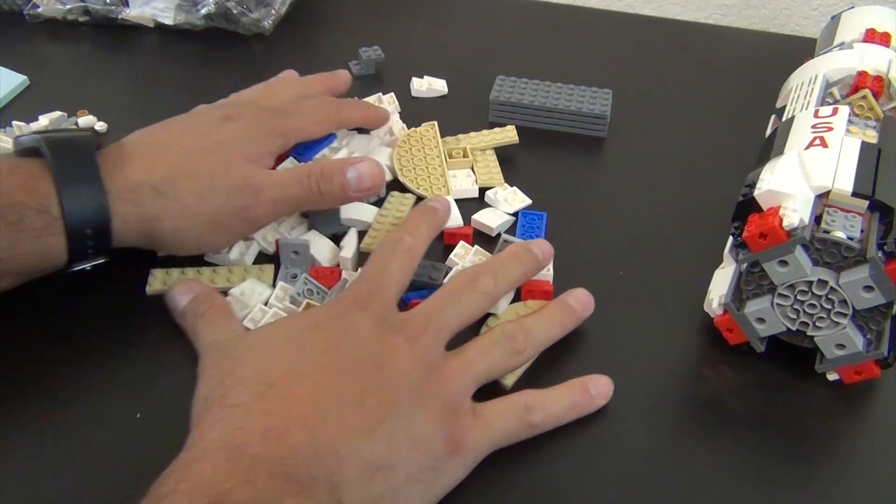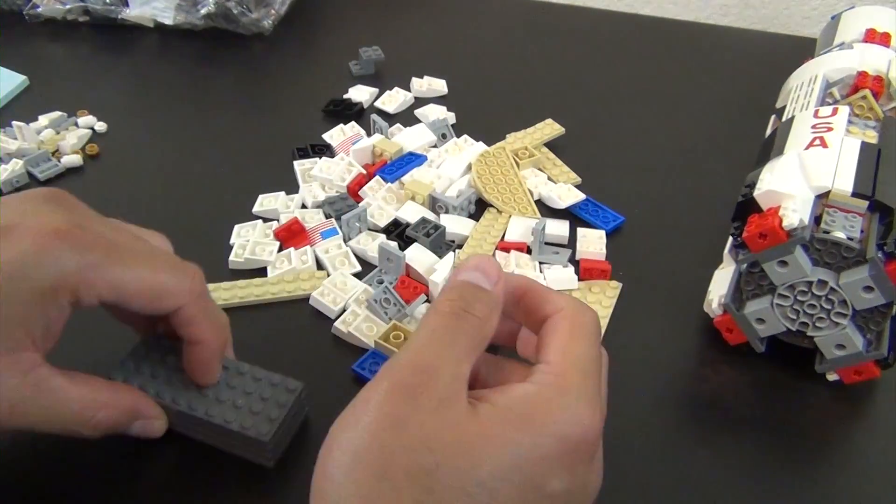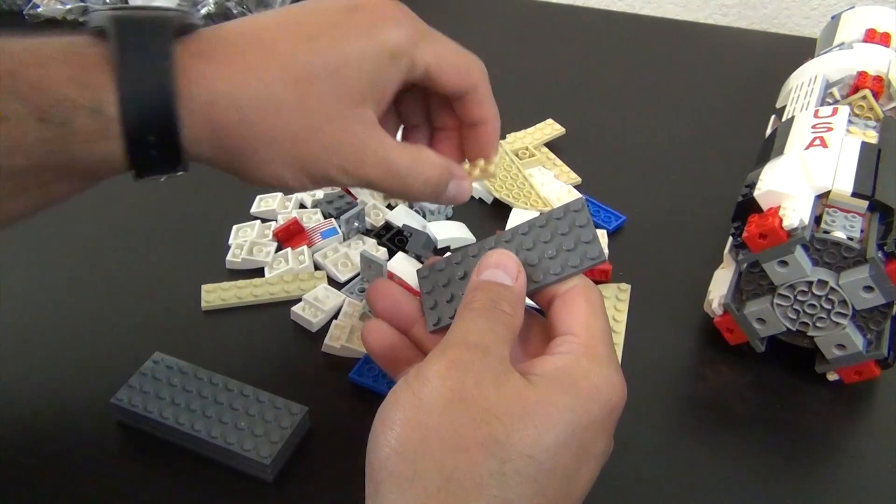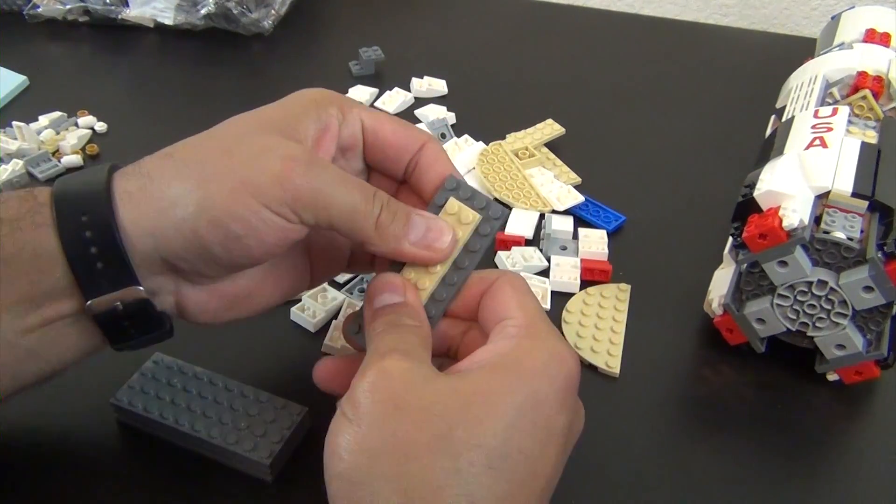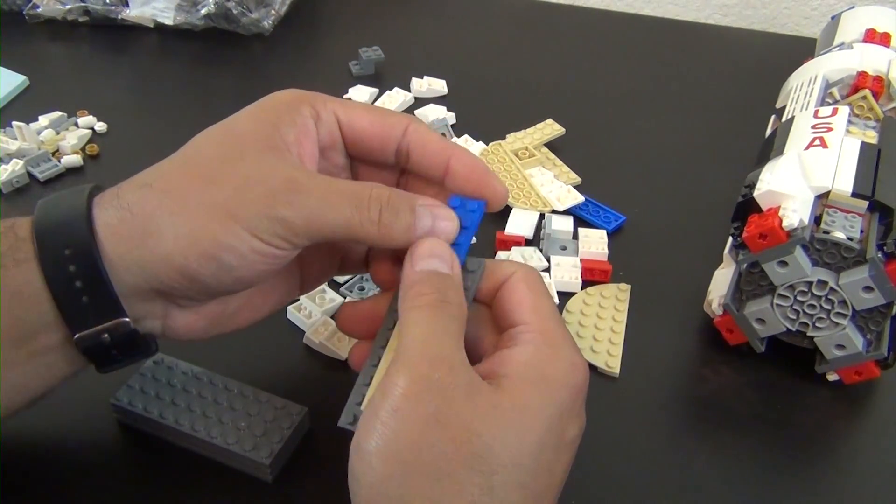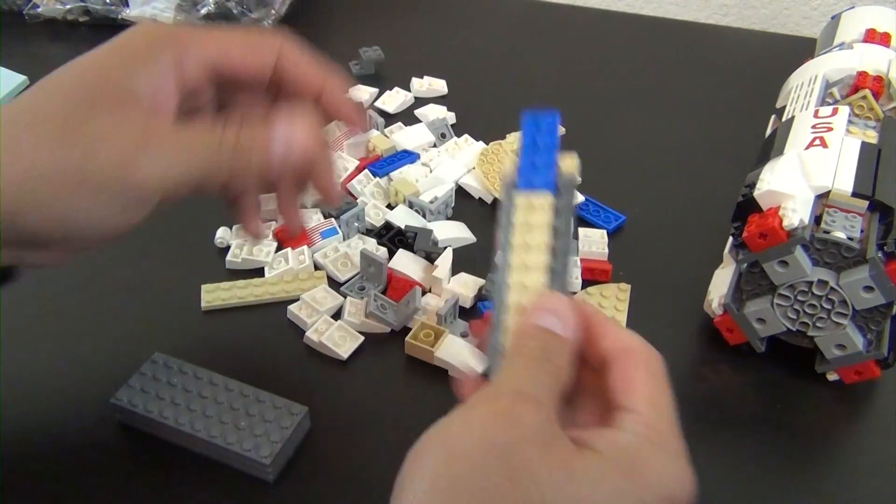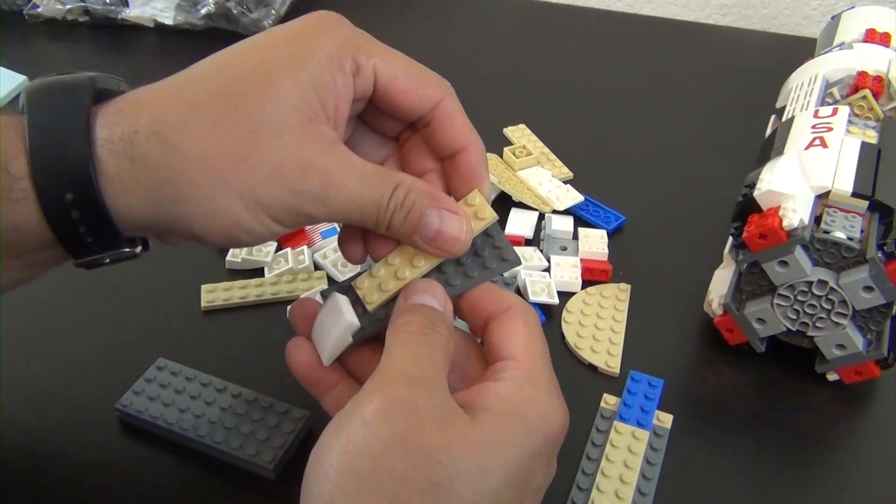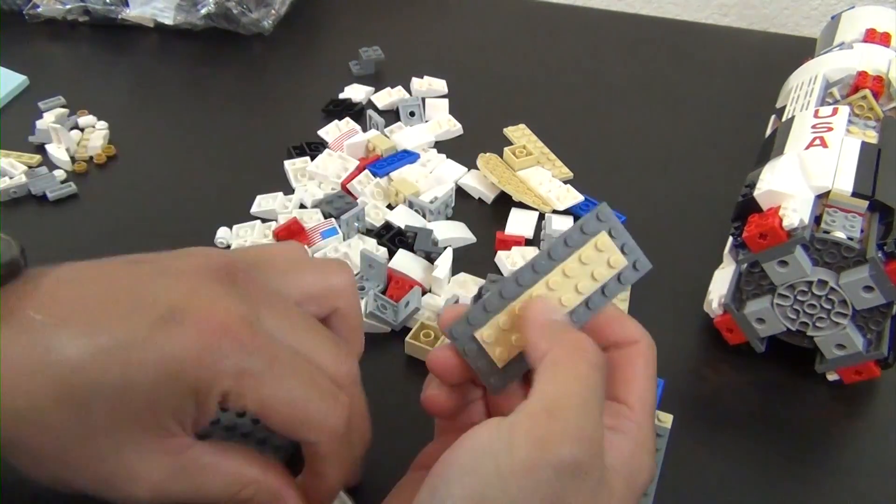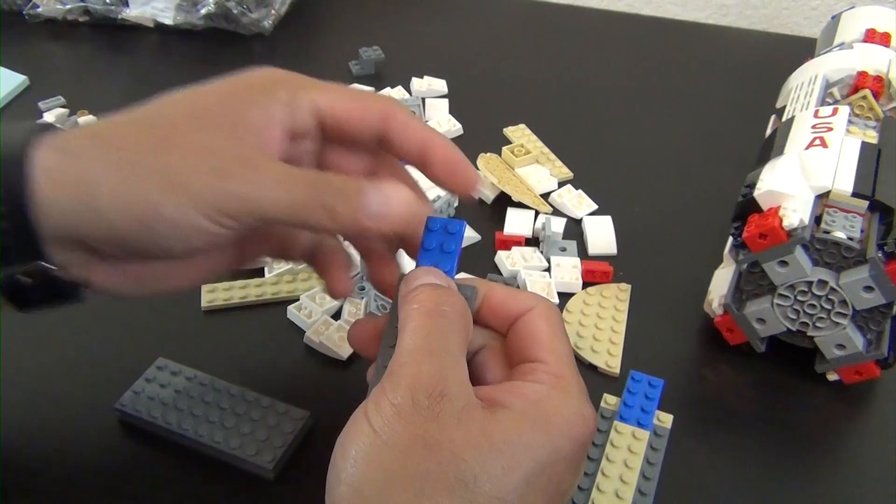Okay, with all of our bag three parts out, we do have another four times build. Start with some plates here, plate underneath there. So that's kind of the beginnings. Get all that caught up before I turn the page in the instructions.